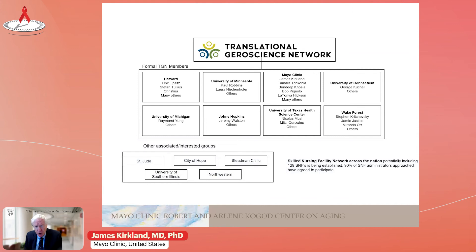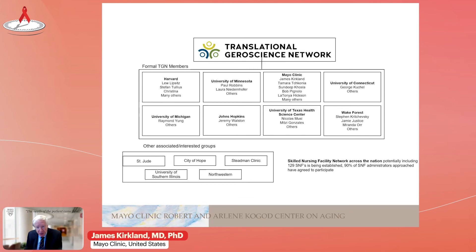We established something called the Translational Geroscience Network, which is funded by the National Institutes of Health. We're conducting multiple clinical trials of senolytics and different types of senolytics, and also what we call senomorphics — drugs like metformin and rapamycin that act in part by inhibiting the SASP of senescent cells — and other agents like NAD+ precursors, sirtuin agonists, CD38 inhibitors, and others, what we call gerotherapeutics. These are drugs that appear to target fundamental aging processes.